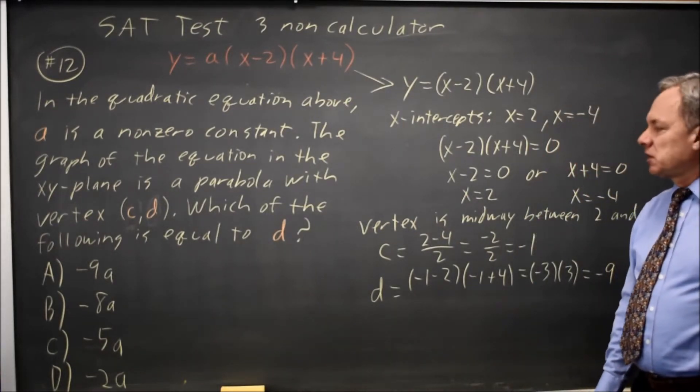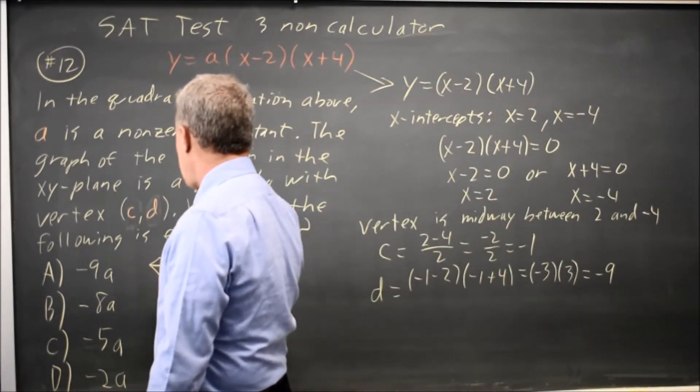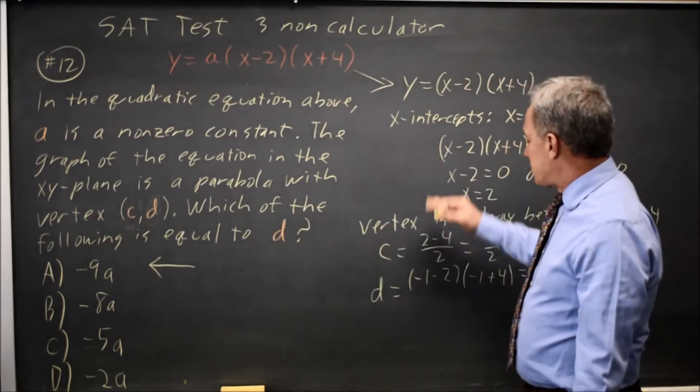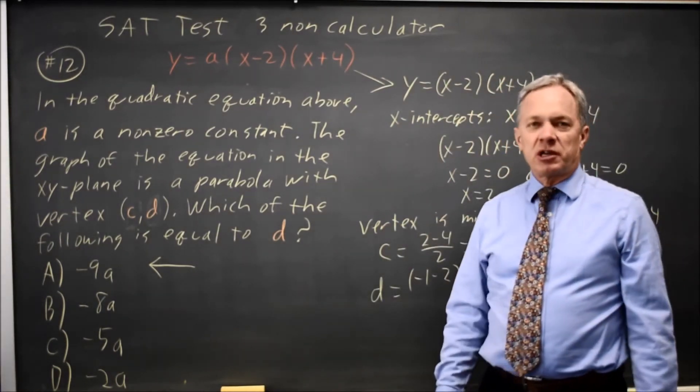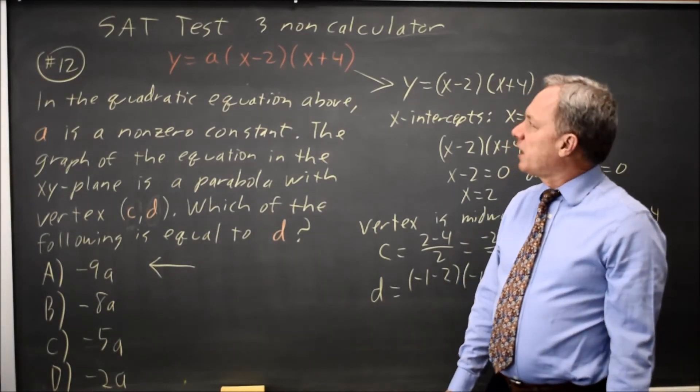When a equals 1, d equals negative 9—that would be choice A. If I had left the a in, I would have gotten the same answer, but multiplied by a. I think it's easier to look at it without the a.